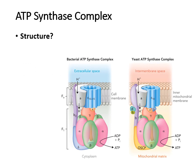Although the purpose of this whole process is to produce ATP, no ATP has been produced yet in the electron transport chain itself. That brings us to complex five: the ATP synthase complex. This complex is made up of two different structural subunits — F-sub-zero and F-sub-one — and the slide shows both a bacterial and a eukaryotic version of ATP synthase.